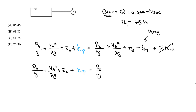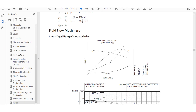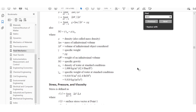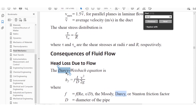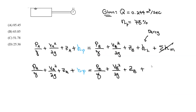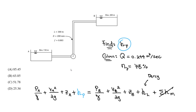Rewriting the full equation: P_A/γ + V_A²/2g + Z_A + H_p = P_B/γ + V_B²/2g + Z_B + H_L. The Darcy-Weisbach equation from the FE handbook gives head loss as H_L = f × (L/D) × (V²/2g), where f is the friction factor, L is pipe length, and D is diameter.